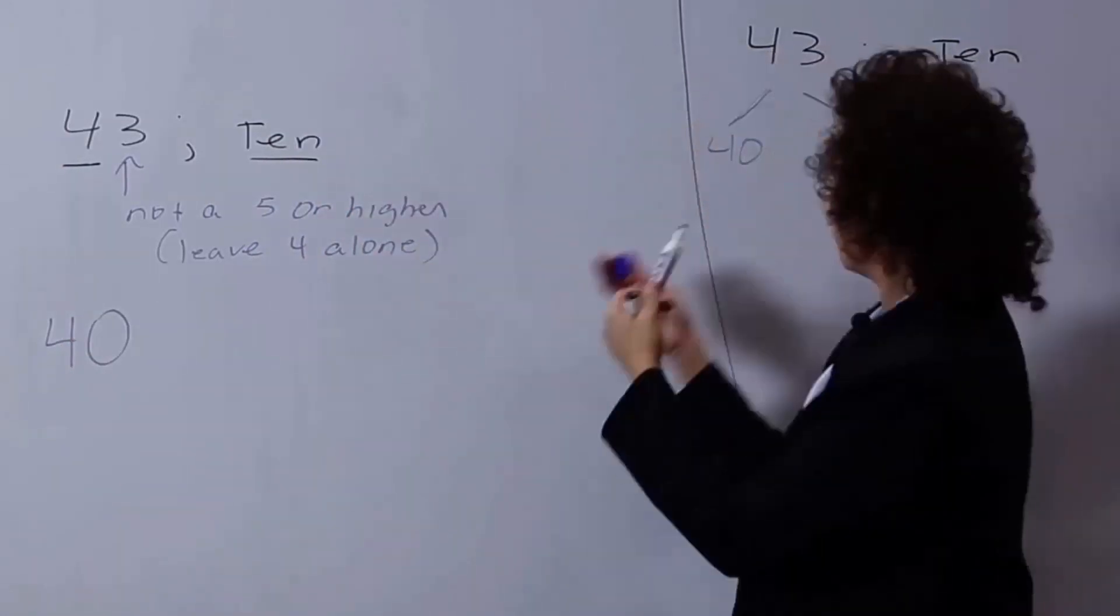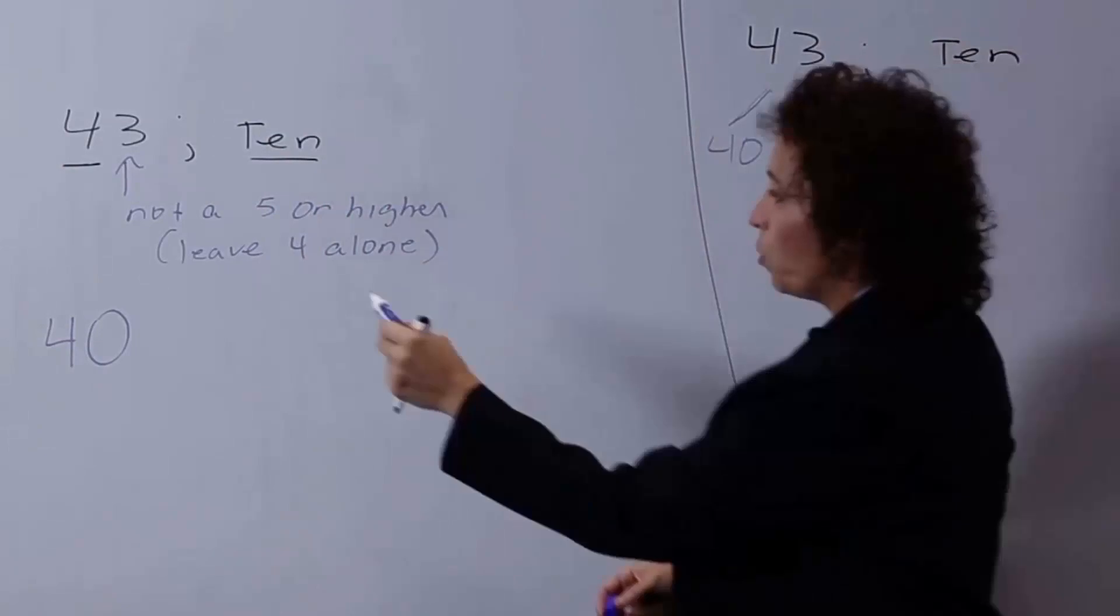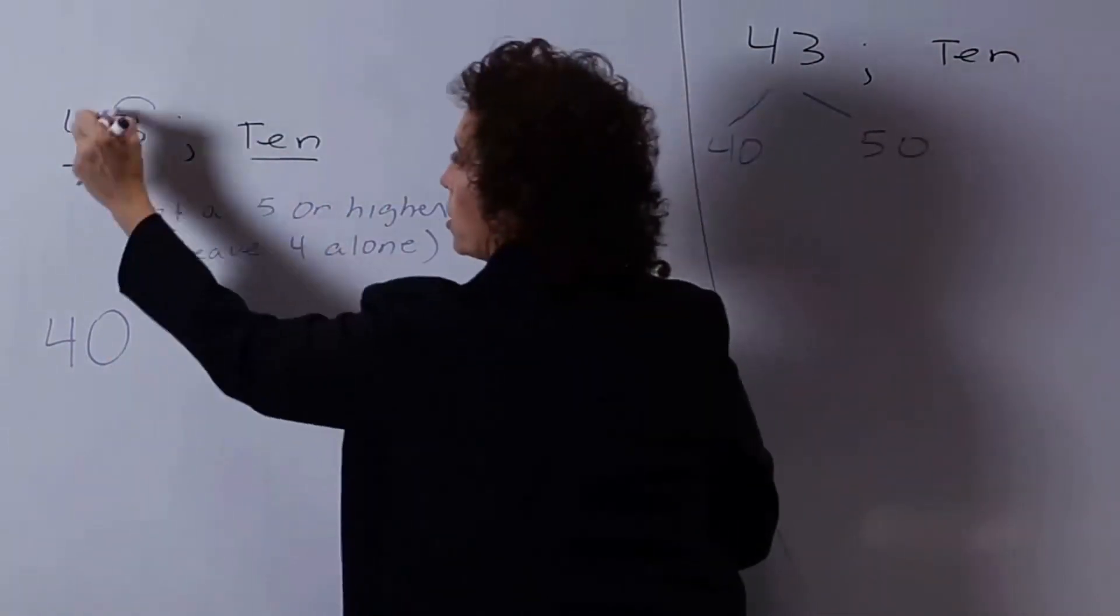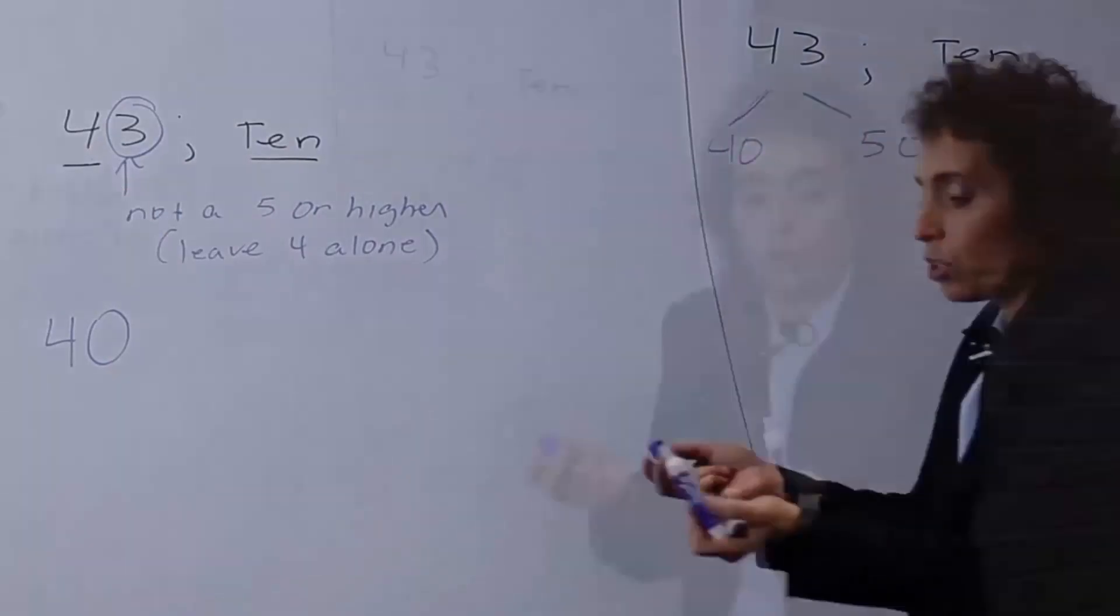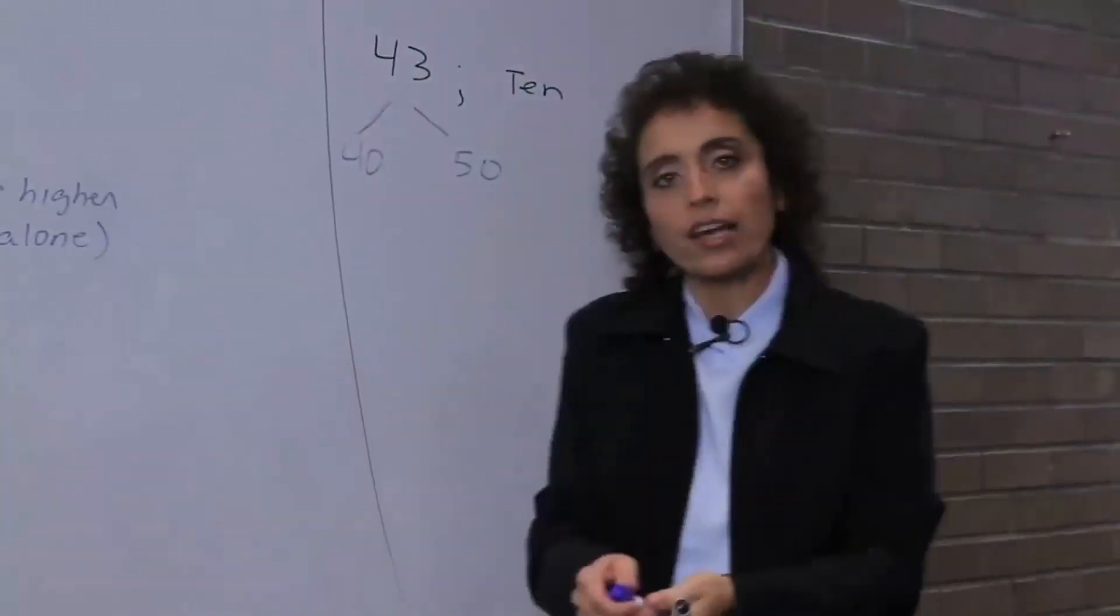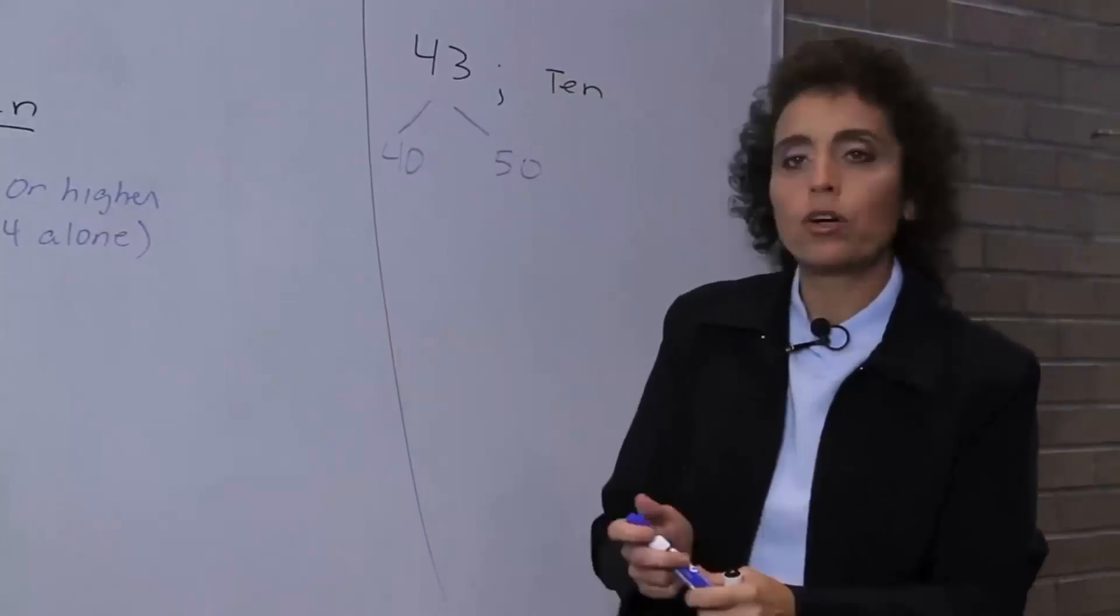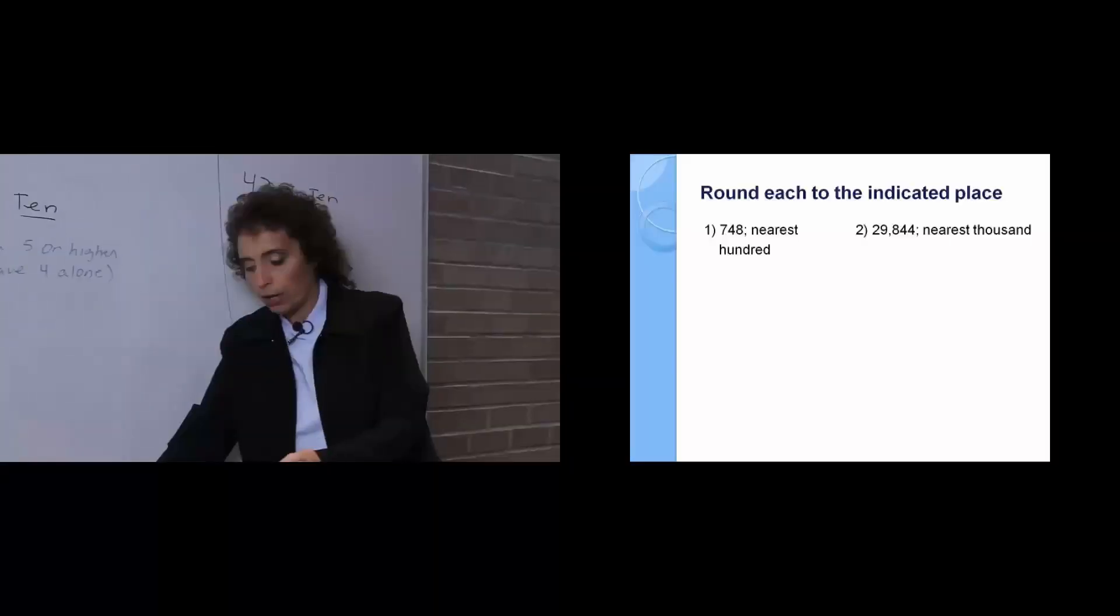We notice that it's closer to 40. Because 43 is closer to 40 - I looked at this number and it's not a 5 or higher, so I left this alone. And that's all there is to rounding. If you would take a second to just do the other 2 problems in your workbook, and then we'll come back and show you if you got your answers right.